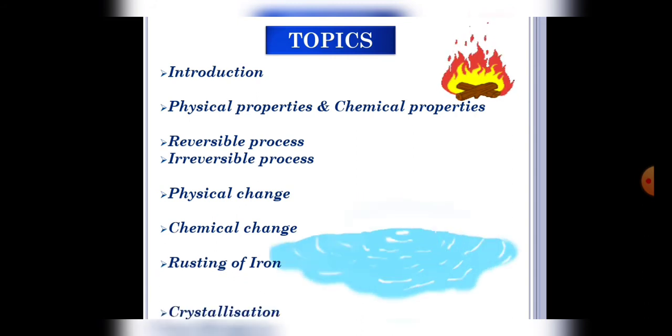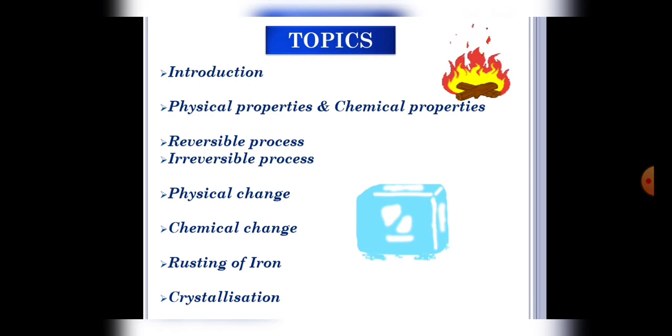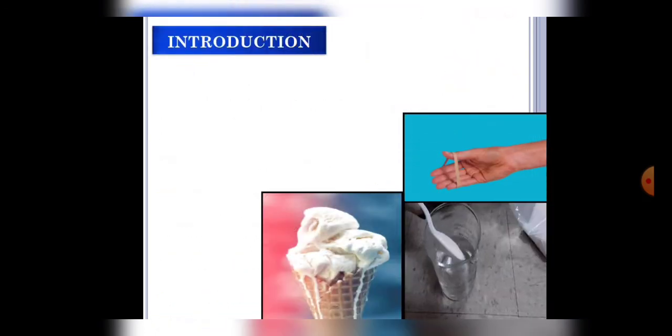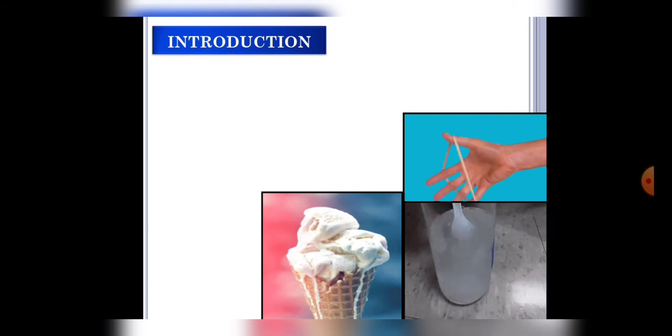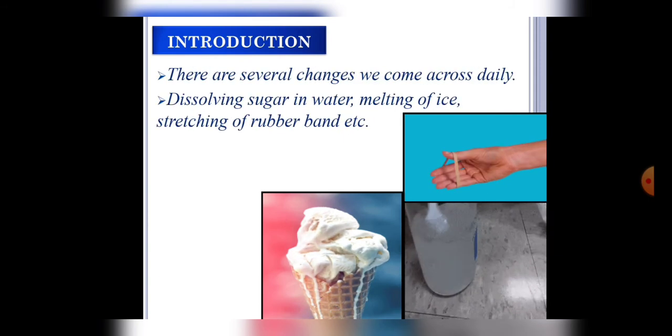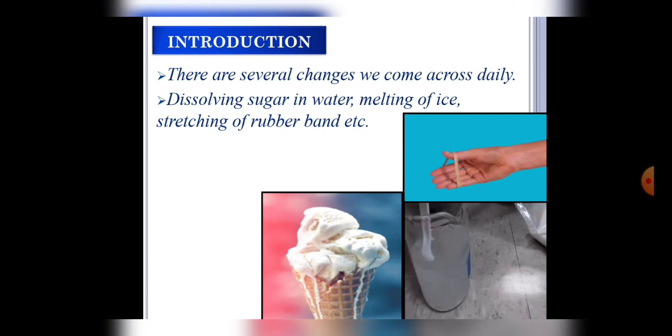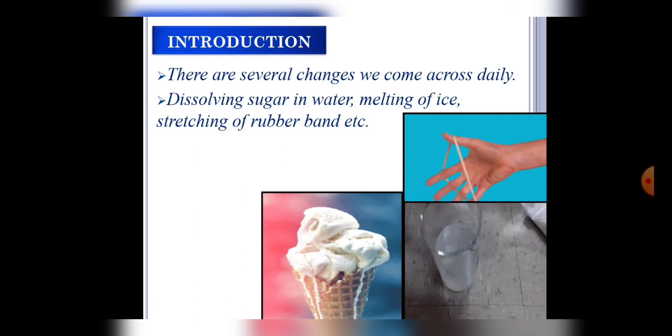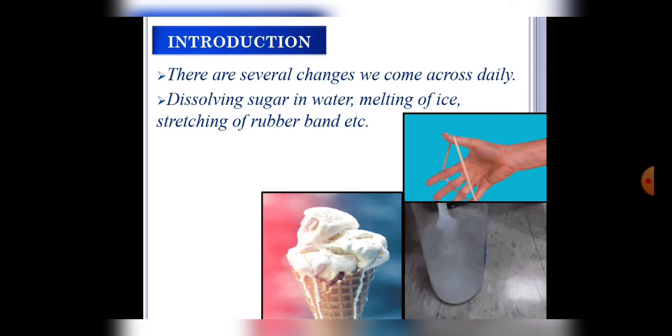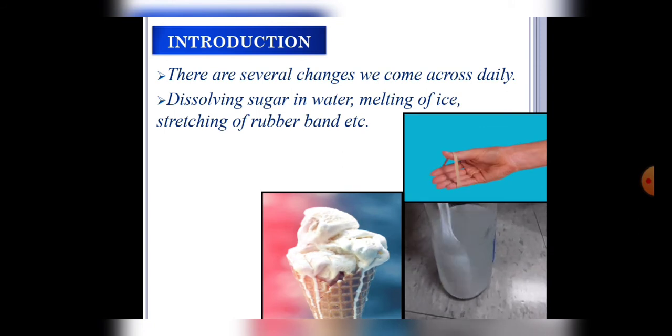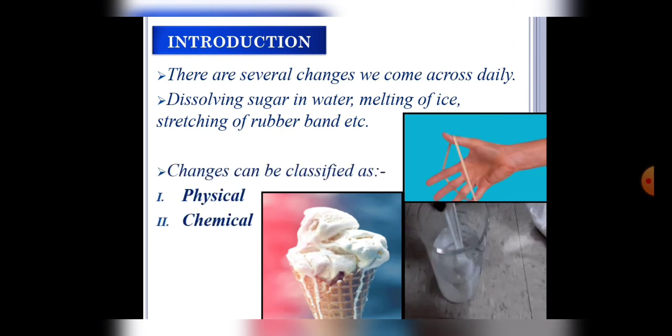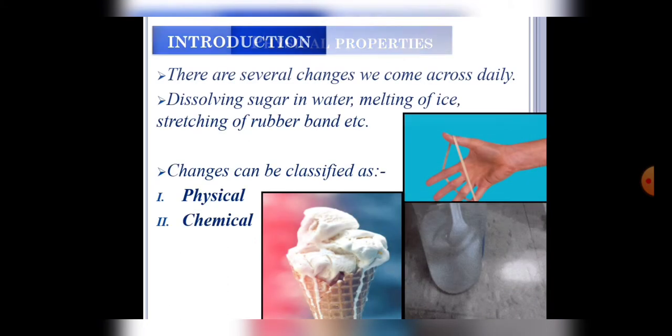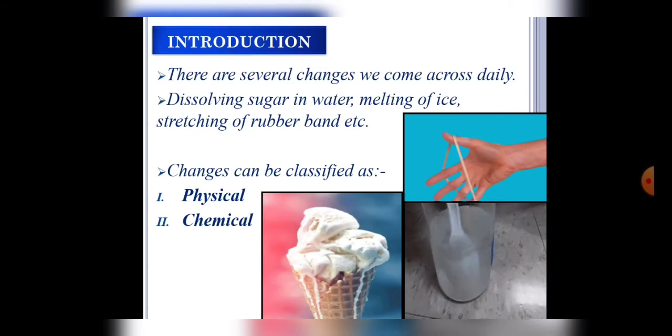And last, crystallization. So let's start with the introduction students. Look at these clips. There are many changes which we see in our day-to-day life like dissolving of sugar in water, melting of ice cream, stretching of rubber band, making of chapati, etc. Now these changes can be classified as physical and chemical changes because a change has two properties: physical property and chemical property.